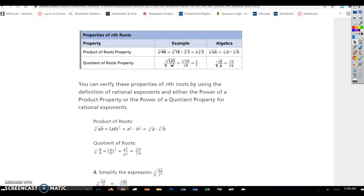5 times 5 is 25, times 5 is 125. So this can be rewritten as 5 cubed, and the cube root of something cubed is just that number. So 5 on the bottom. 8 is also a perfect cube. 2 times 2 is 4 times 2 is 8. So 2 cubed is 8. So you can rewrite that as just 5 halves.